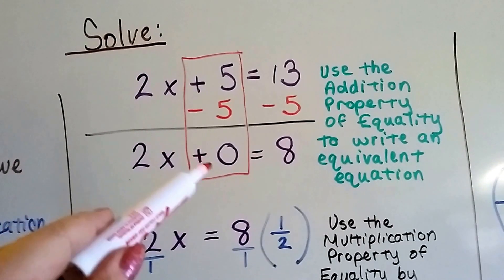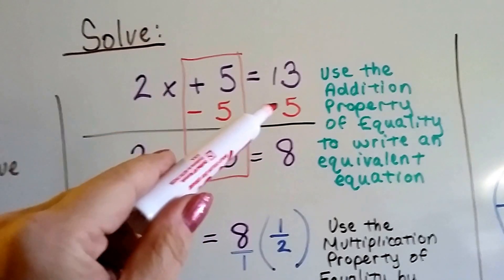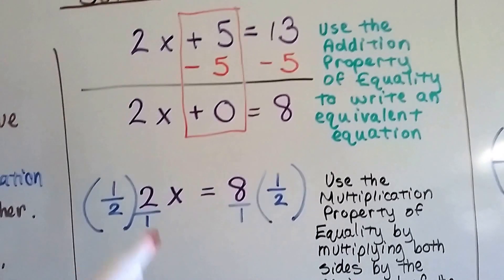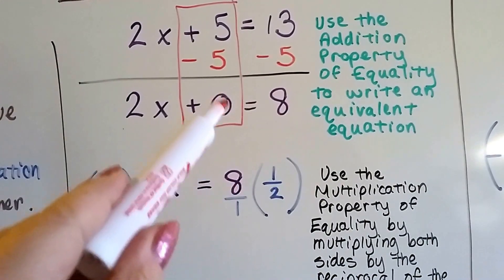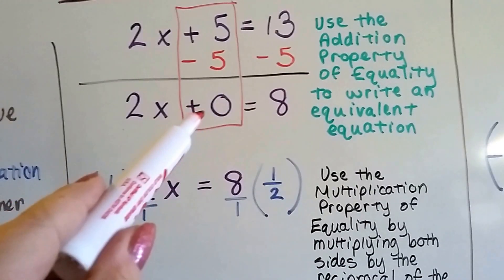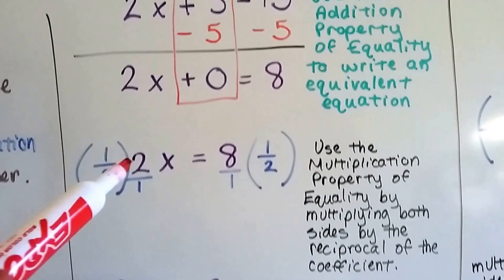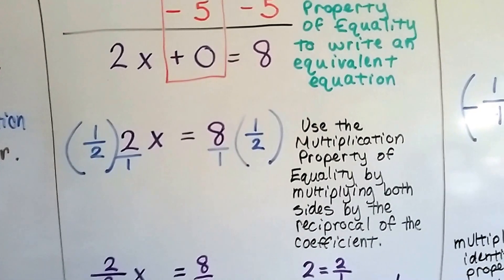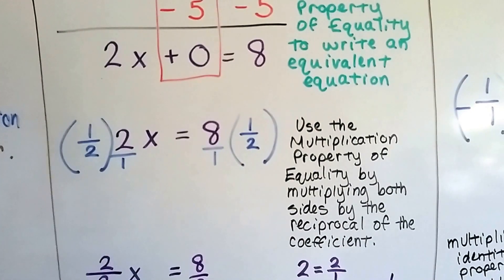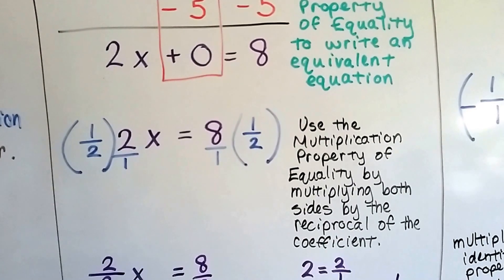We have 2x plus 0 equals 8. 13 minus 5 is 8. Now we've got 2x equals 8, because we don't need to write that plus 0. And we use the multiplication property of equality by multiplying both sides by the reciprocal of the coefficient.